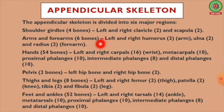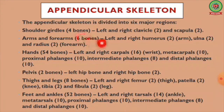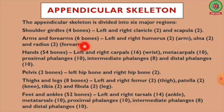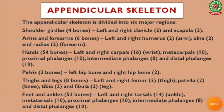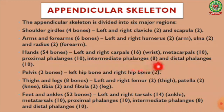The appendicular skeleton is divided into six major regions. First, the shoulder girdle consisting of four bones: left and right clavicle and scapula. Second, arms and forearms consisting of six bones: left and right humerus, ulna, and radius. Third, hands, which comprise 54 bones including left and right carpals, metacarpals, proximal phalanges, intermediate phalanges, and distal phalanges.